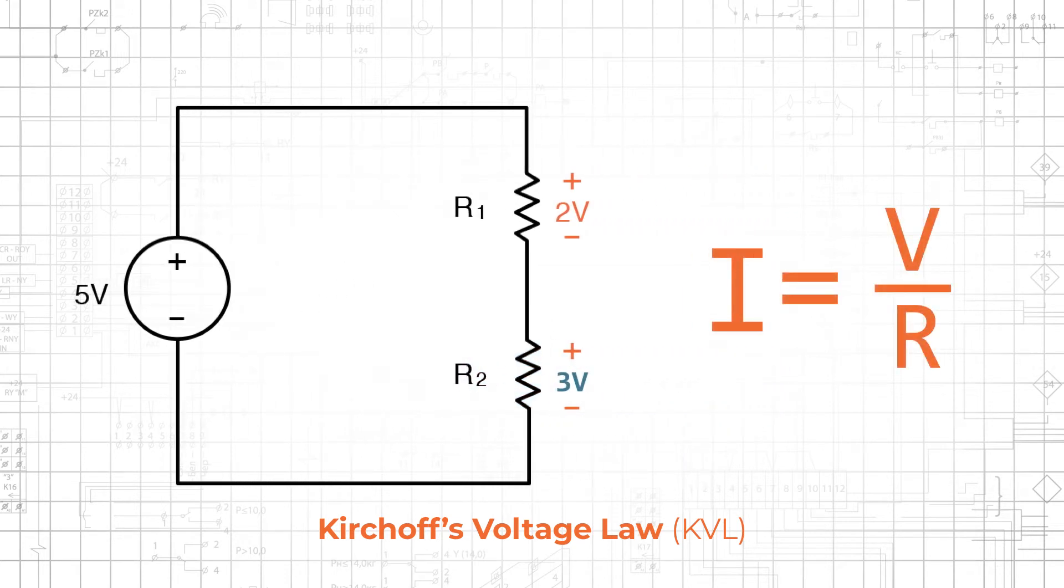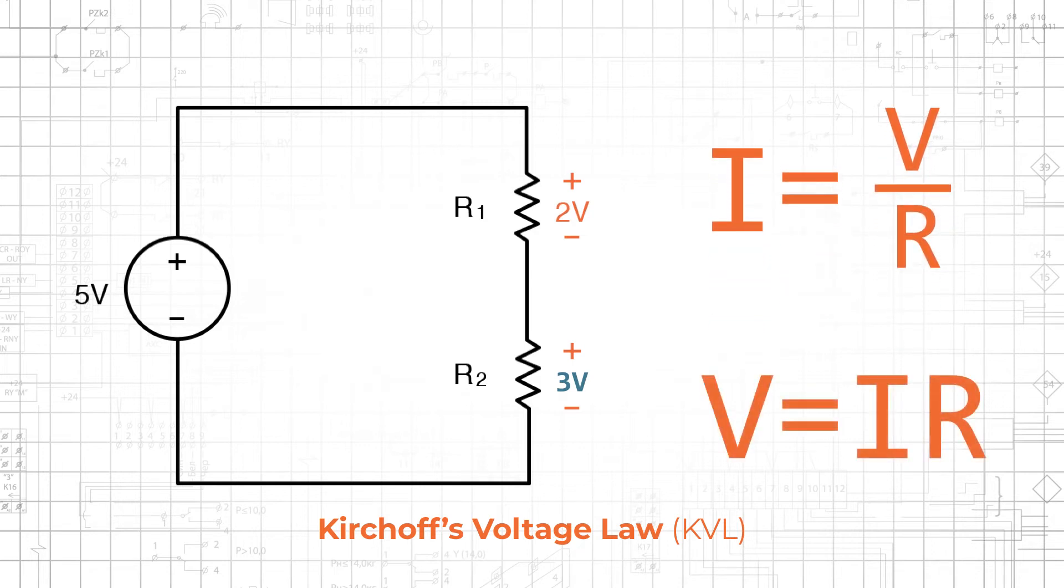Ohm's law states that the current through a resistive component is equal to the voltage across the component divided by the resistance. We can rearrange this equation to show that the voltage across a resistive component is equal to the current flowing through the component multiplied by the resistance.